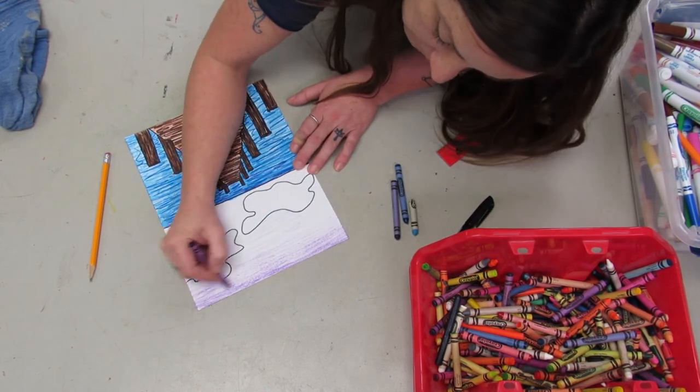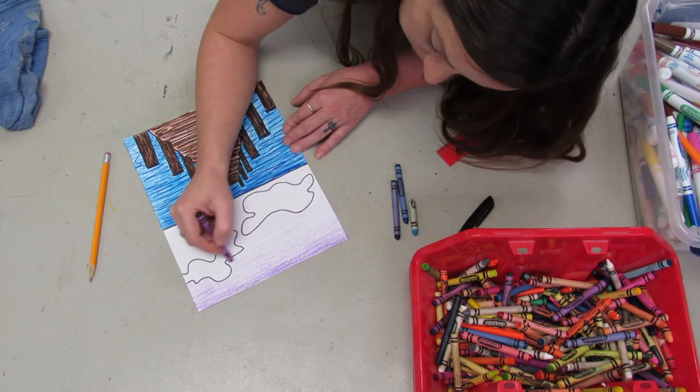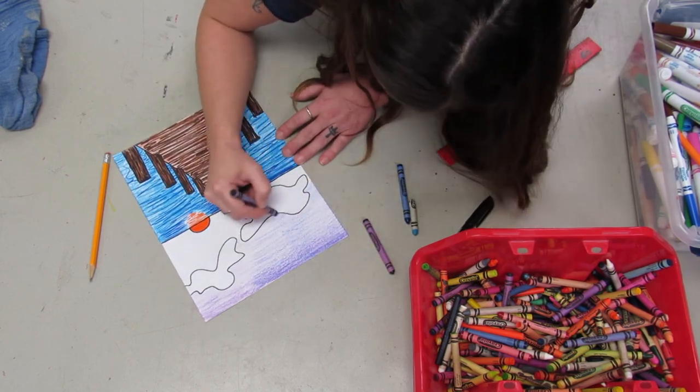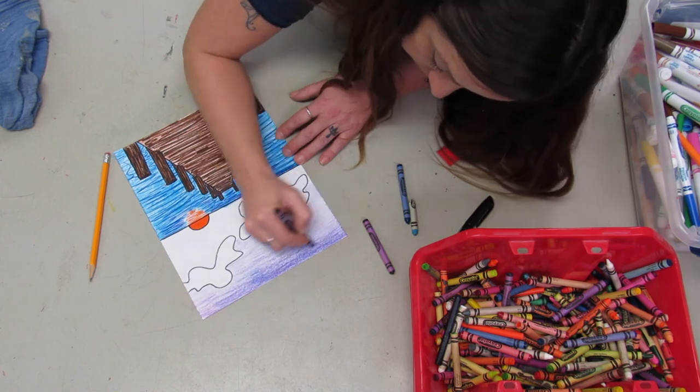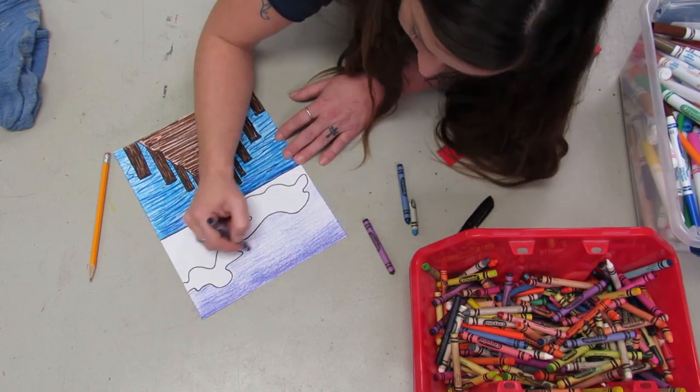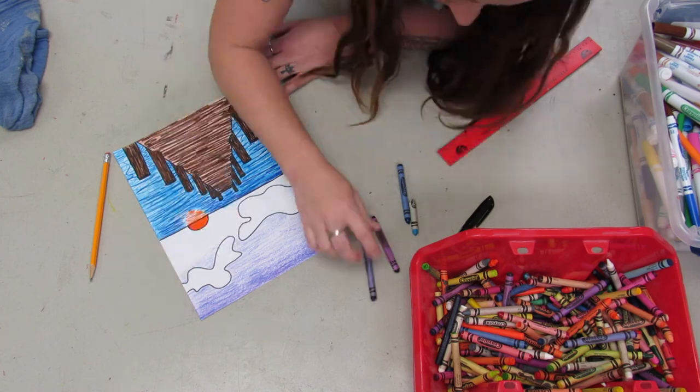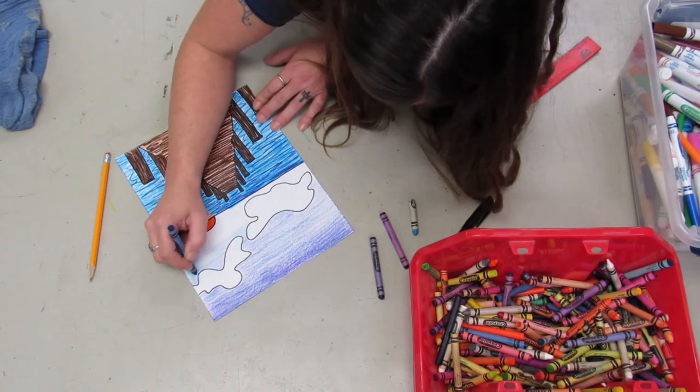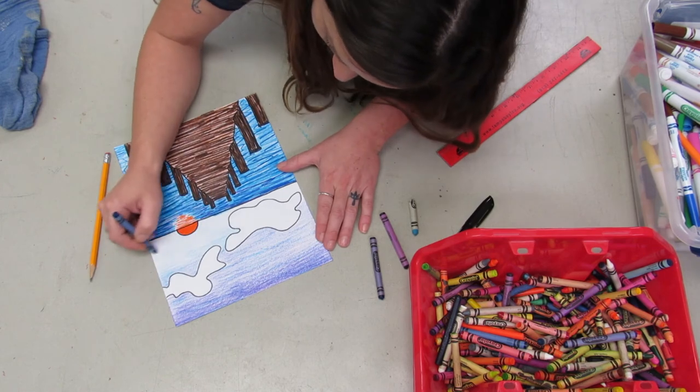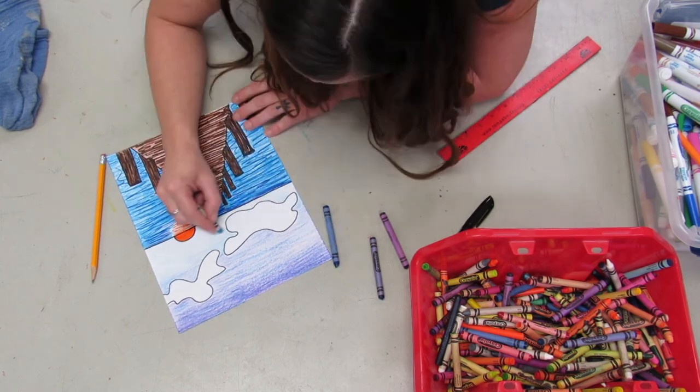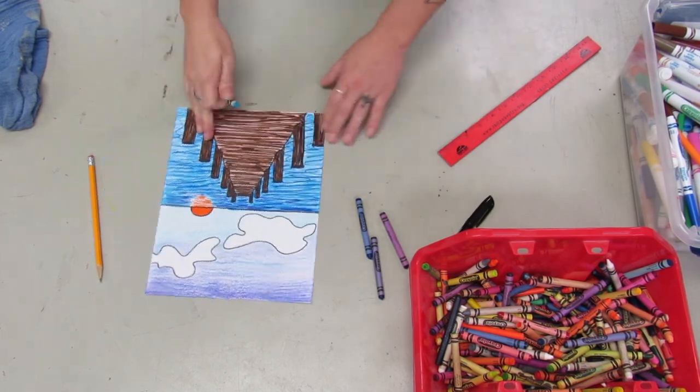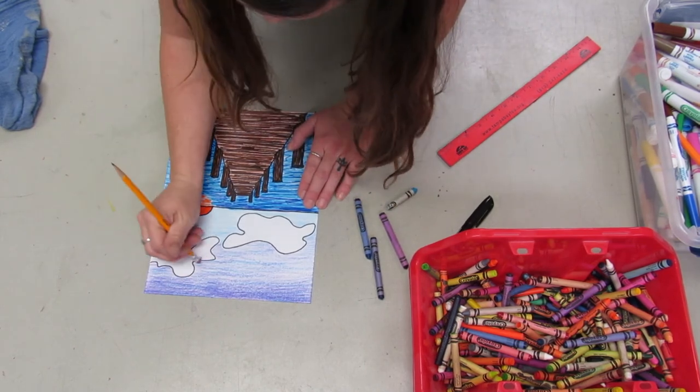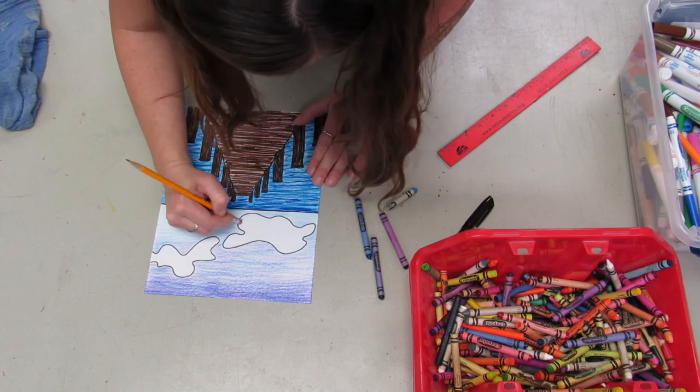Now I'm gonna do the sky. Usually the sky at sunset, when it's getting closer to nighttime, it's gonna be darker and have a lot more purples in it. So I'm gonna use some purple first, and then I'm using an indigo crayon, and then I'm gonna use a regular blue crayon. And then I found one crayon in my box that was a light blue color, so I'm gonna use that when I get closer to the horizon line.